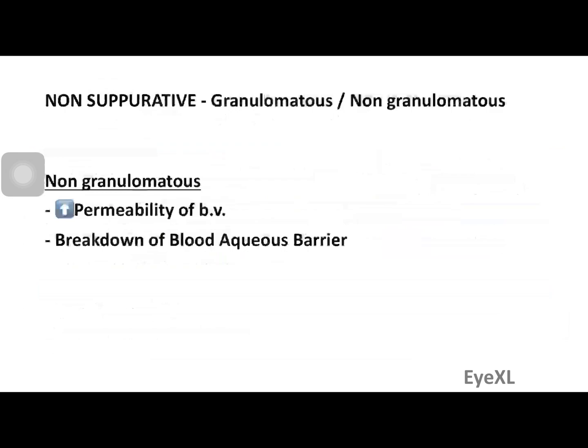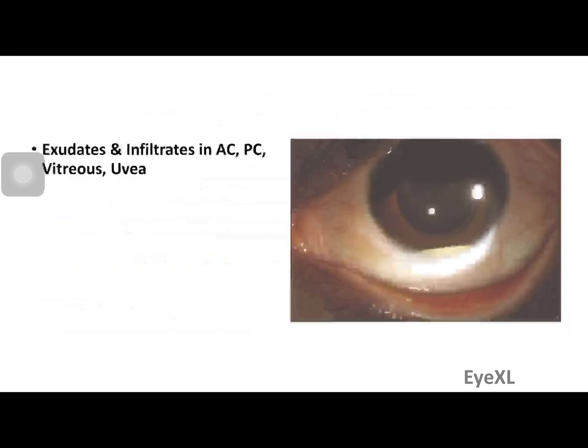Non-suppurative uveitis is non-pus-producing and can be granulomatous or non-granulomatous. In non-granulomatous uveitis, the primary problem is increased permeability of blood vessels, causing breakdown of the blood-aqueous barrier. Polymorphonuclear cells enter the anterior chamber, forming exudates — hypopyon (pus in the anterior chamber), corneal infiltrates, or keratic precipitates. The posterior chamber and vitreous can also be involved in severe cases.